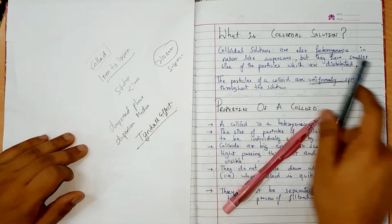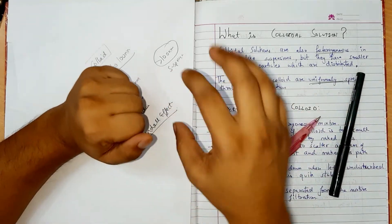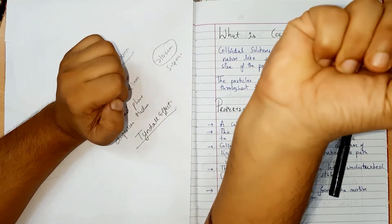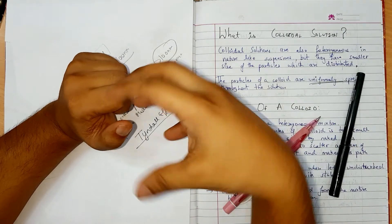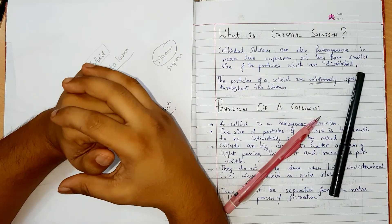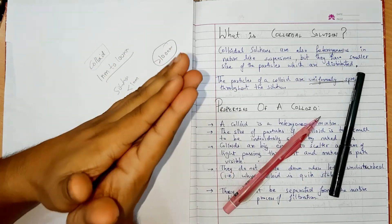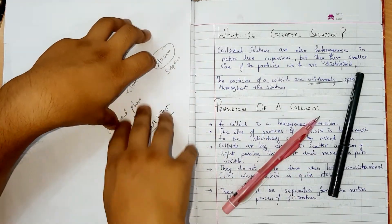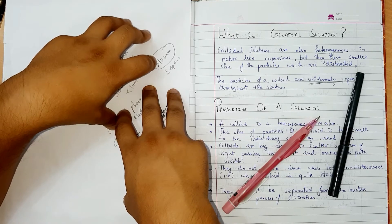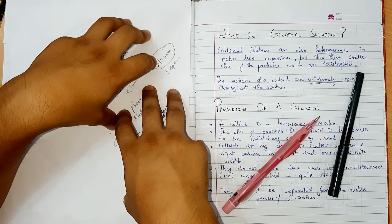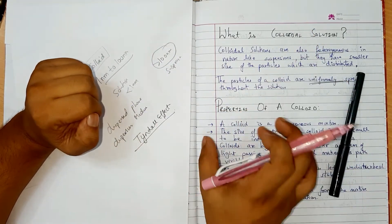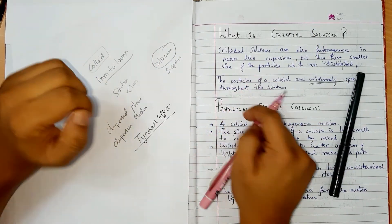Tyndall effect. We have an example. We have a black room. It is dark and in that, light is moving. So we have a scatter, the particle scattering of light.